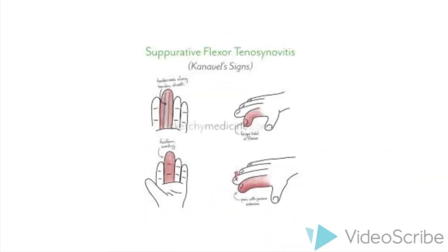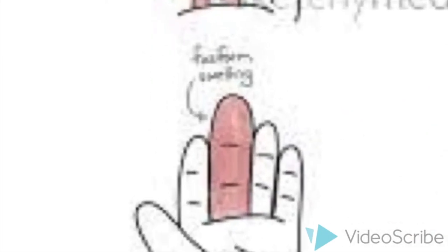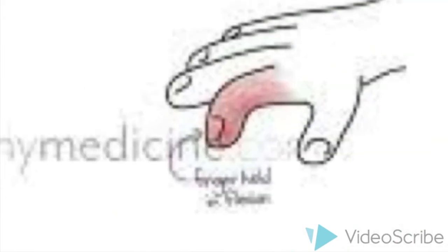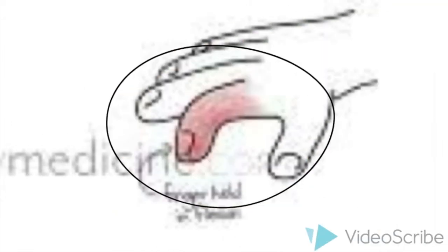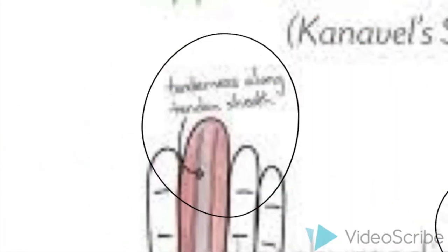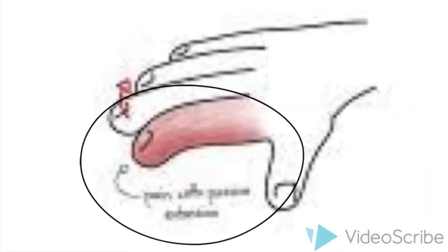Isolated infection of the digital flexor sheaths is known as flexor tenosynovitis. This presents with Kanavel's cardinal features, including fusiform swelling of the whole finger, partially flexed posture of the finger, tenderness across the flexor tendon sheath, and pain on passive extension of the finger.